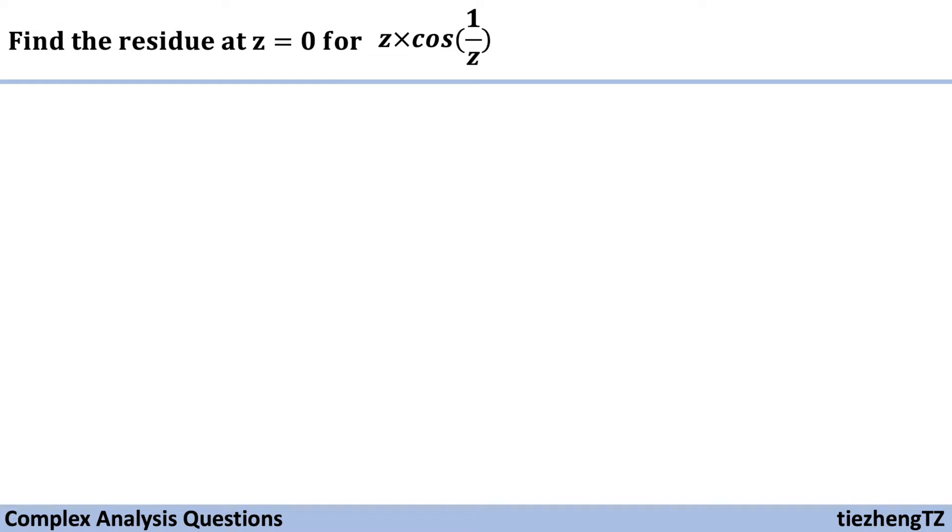Today's question is to find the residue for the function z times cosine 1 over z at that point z equals 0.